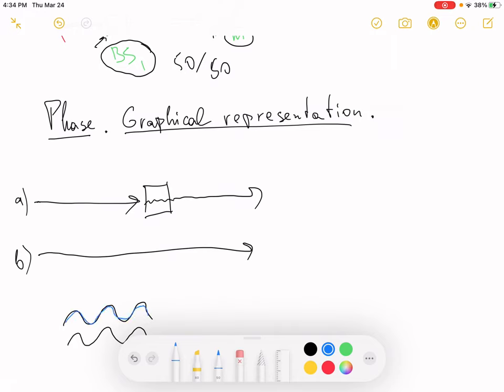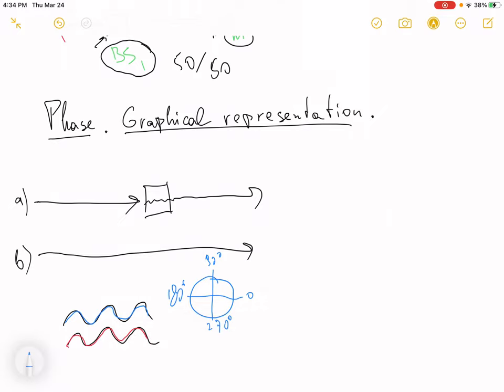You can represent each wave as a vector on a unit circle. This is a unit circle. Here's 0 degrees, 90 degrees, 180 degrees, 270 degrees. Simultaneously I will write the same notation not in degrees but in radians: pi over 2 is 90 degrees, pi is 180, and 3 pi over 2 is 270 degrees.